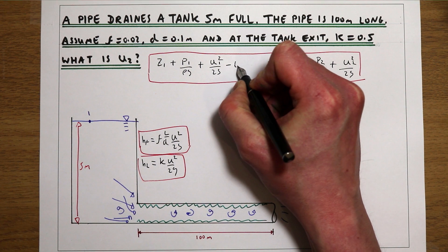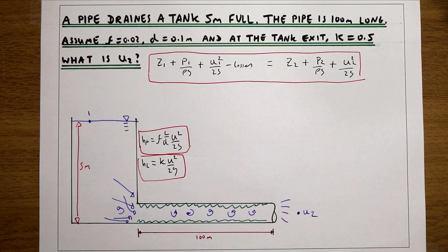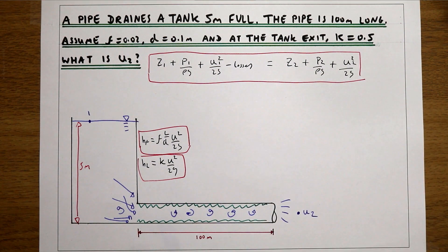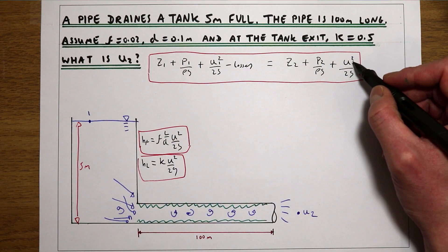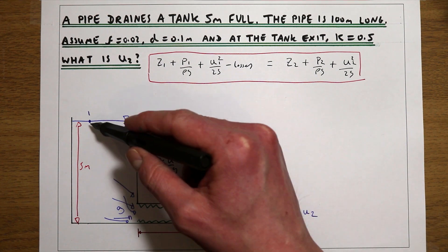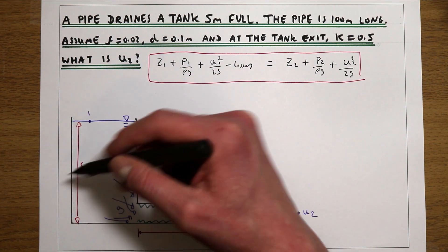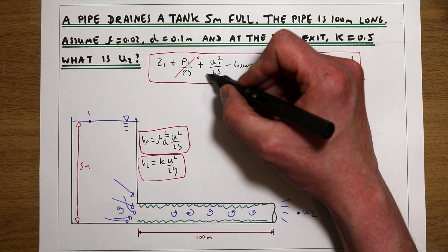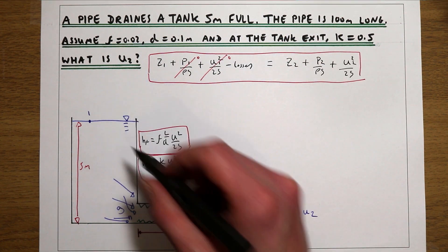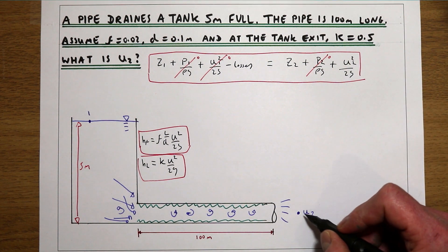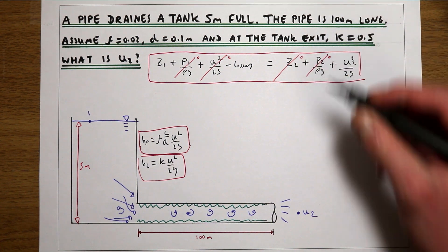Our total losses are going to be subtracted from the left-hand side of Bernoulli's equation. We're now saying that the total energy at point one minus the loss of useful energy in the pipe equals the total energy at point two. We can cancel out the terms we don't need: at point one, all energy is elevation — no pressure above it (atmospheric, same as point two) and negligible velocity at the surface. At point two, there's no pressure since the fluid is leaving the pipe, and no elevation since we're at the bottom of the system.